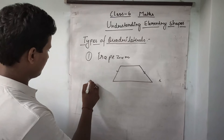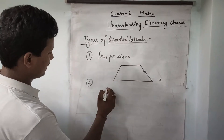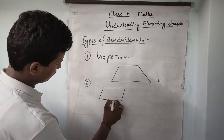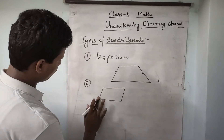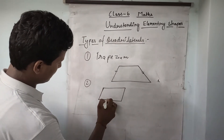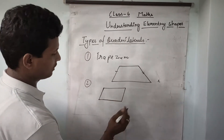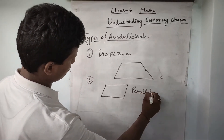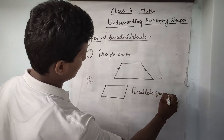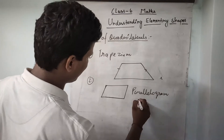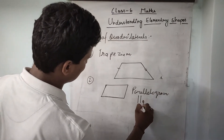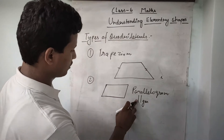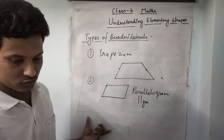The second type is a parallelogram, where opposite sides are parallel and equal. This is called a parallelogram. The representation of parallelogram is parallel lines and 'gm'. We represent it like that.